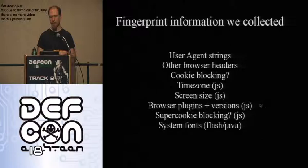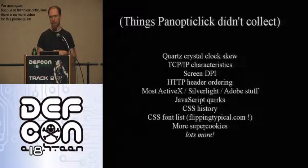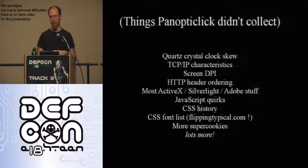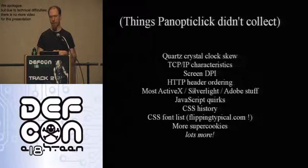The two most problematic measurements were plugins and fonts. There are many things we didn't collect that could make fingerprints even nastier. We've since seen companies in the private sector selling fingerprinting systems that go beyond our eight measurements. One particularly nasty technique is measuring the clock skew of a quartz crystal — how much faster or slower your computer's clock runs — which is very hard to hide and unique to your hardware. You can also measure the operating system's TCP/IP implementation characteristics, header ordering, ActiveX/Silverlight/Adobe library properties, JavaScript quirks unique to each browser, and even browser history via CSS detection.